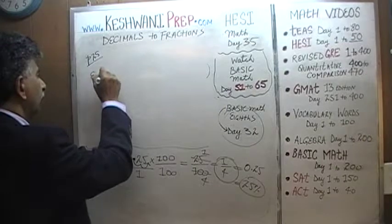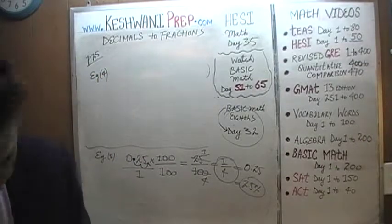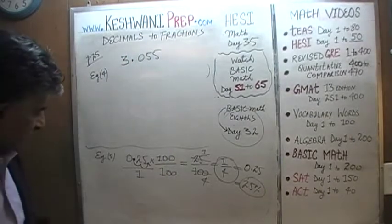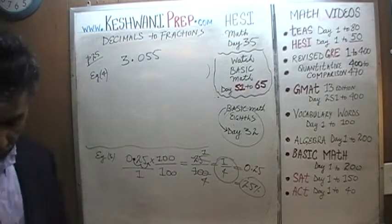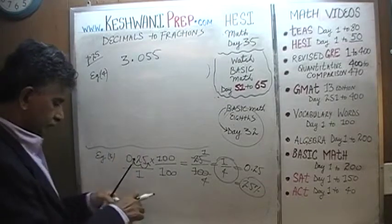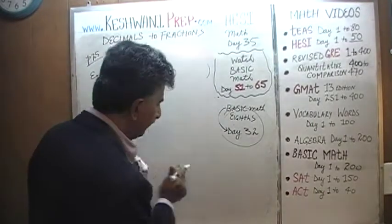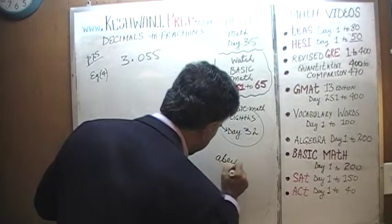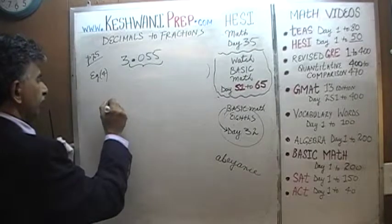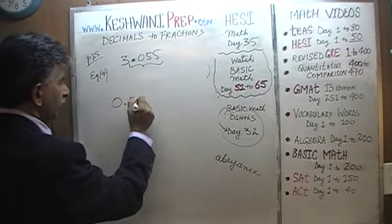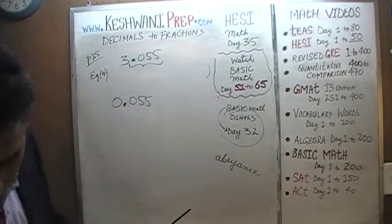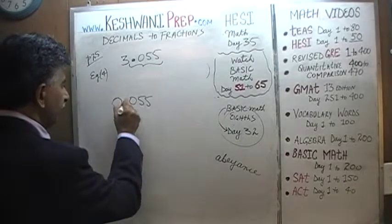Let's go to number four. In number four we have 3.055. The thing to do here is to not worry about the three — let's keep the three in abeyance. Let's just worry about 0.055. When you look at it this way, it's very obvious that we need to move the decimal three places: one, two, three.